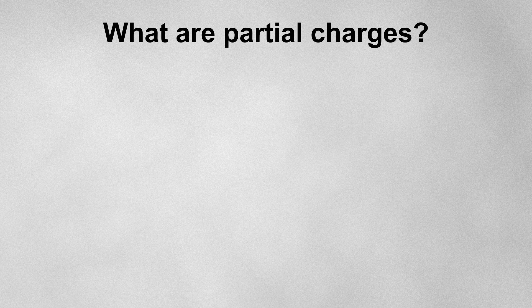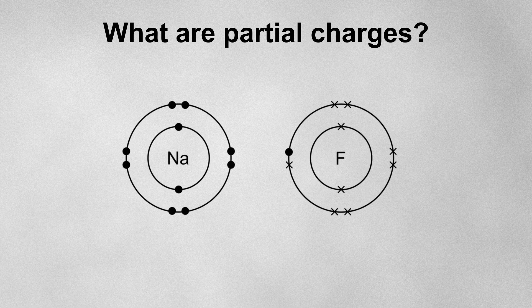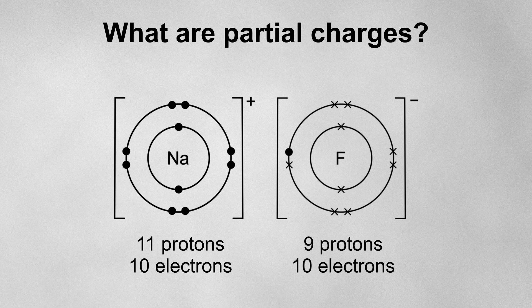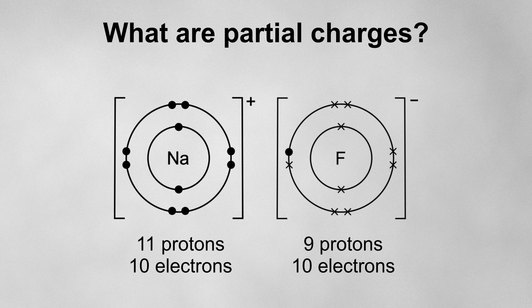By this point, you'll be familiar with the concept of an ion, which has a full positive or negative charge due to the fact that it has mismatched numbers of protons and electrons. However, in covalent compounds such as organic molecules, partial charges can also arise.